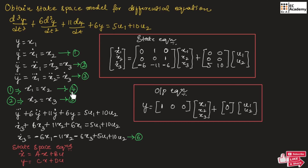Equation 1, we can write as x1-dot equal to x2 — call this equation number 4. And equation number 2, we can write x2-dot equal to x3 — call this equation number 5.